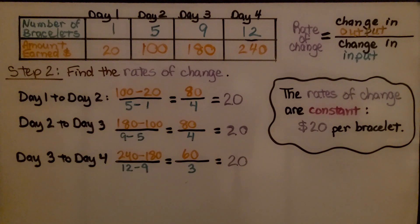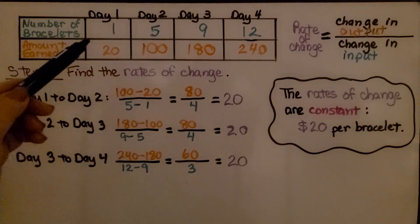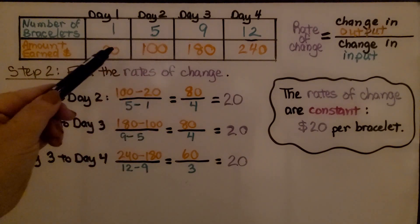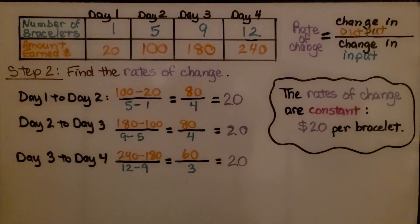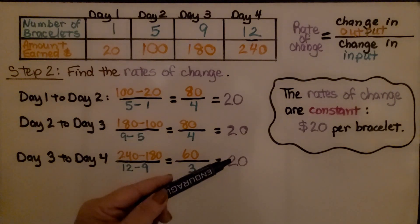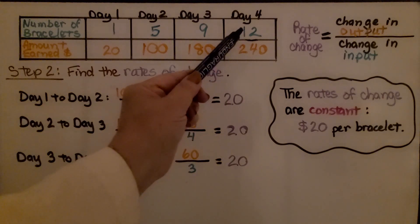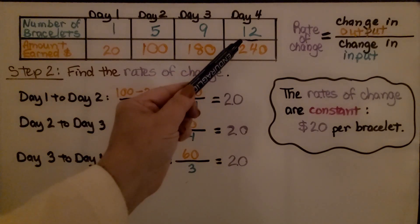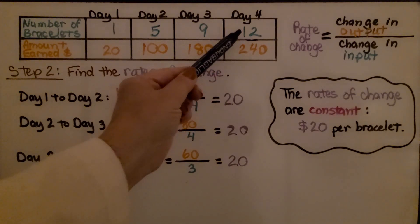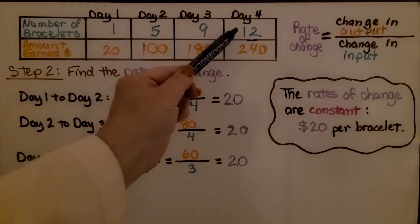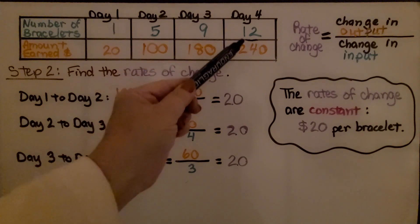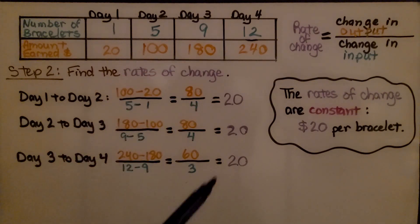The rates of change are constant — $20 per bracelet. We know that's how much she charged for every single bracelet she sold. Knowing it's a constant $20, we'd be able to figure out how much money she'd make if she sold 20, 50, or 100 bracelets — just multiply by 20.